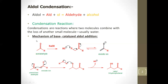In the next step, the enolate ion attacks an unenolized aldehyde. Sodium hydroxide is not strong enough to enolize all the aldehyde in the beaker, so the enolate attacks the electrophilic carbon center. The electrons of the oxygen move, the pi electrons from the double bond move onto carbon to form a new bond.